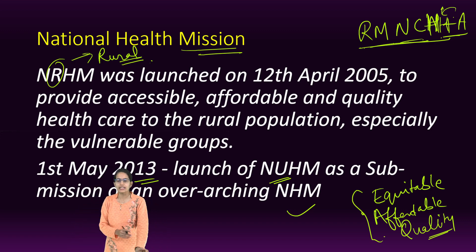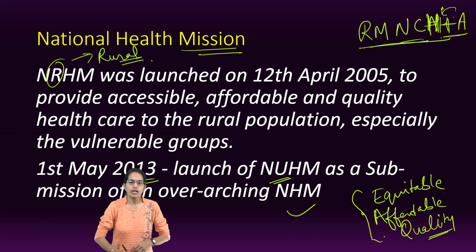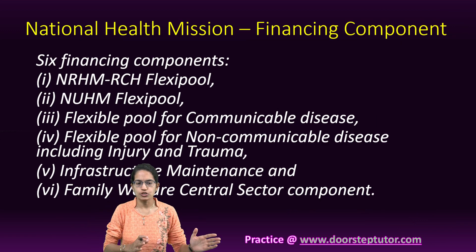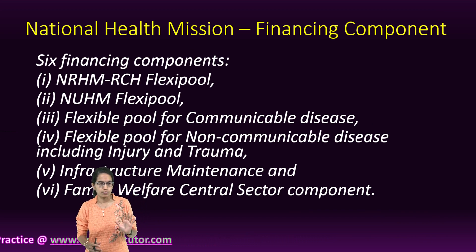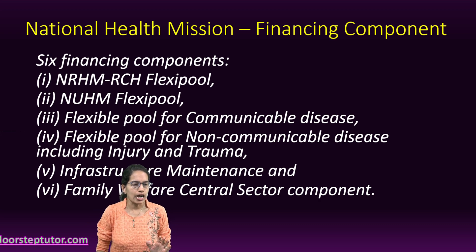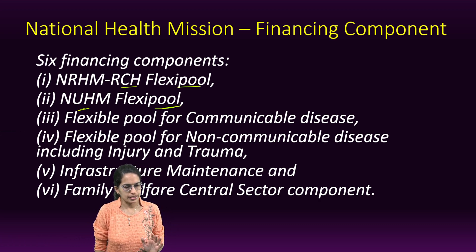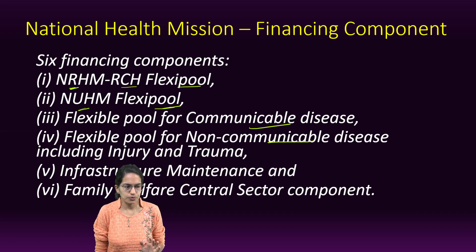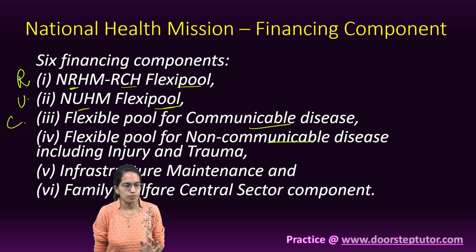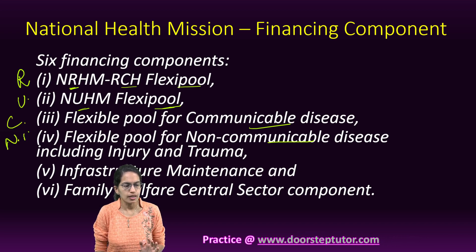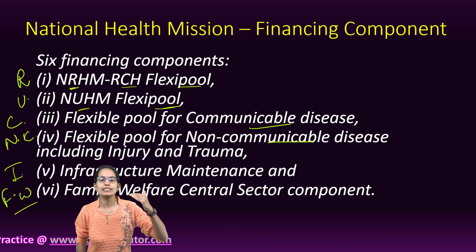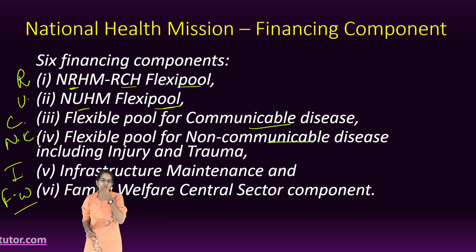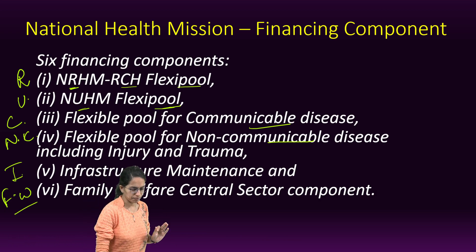For both the rural and urban missions, there are six financing components: the RCH Flexi Pool, the Urban Flexi Pool, the Communicable Diseases pool, the Non-Communicable Diseases pool, and pools for Infrastructure and Family Welfare. These six components cover the financing of the National Health Mission.